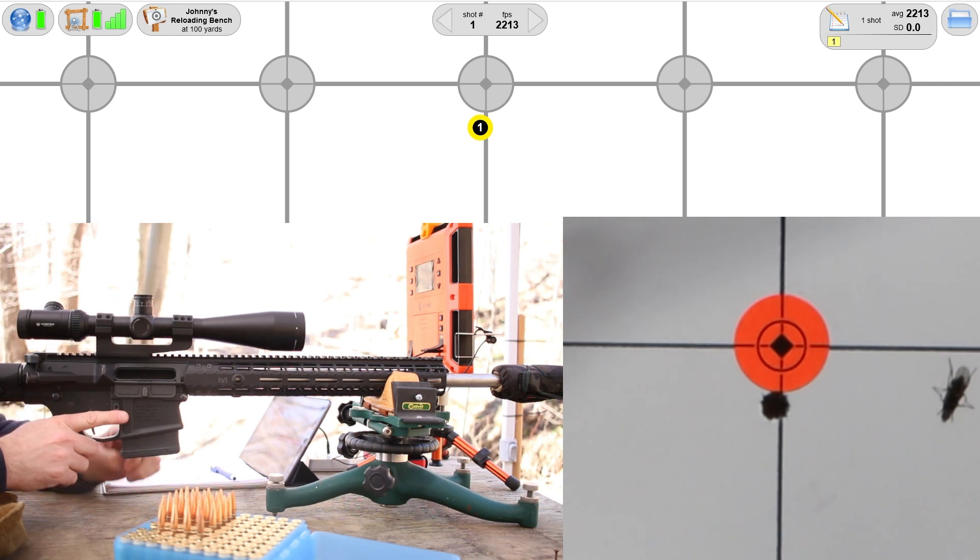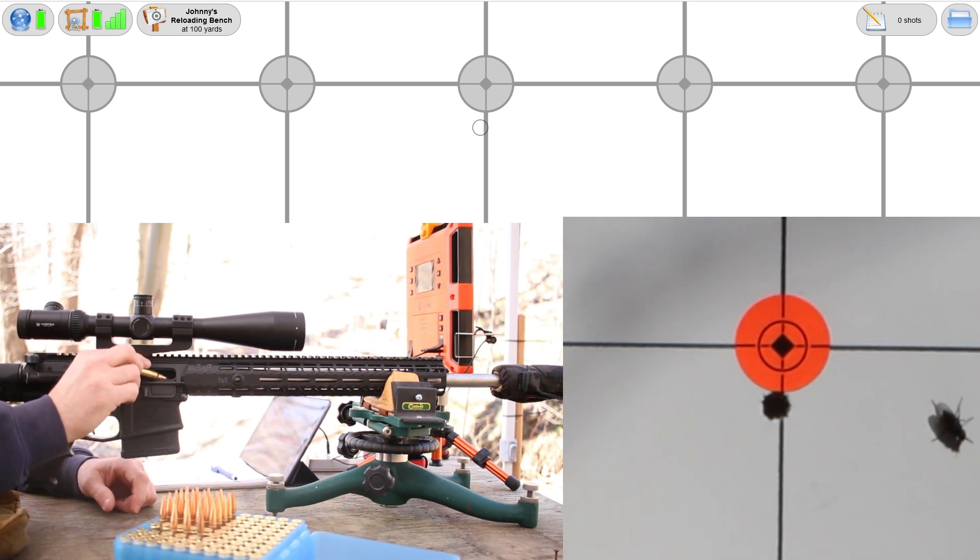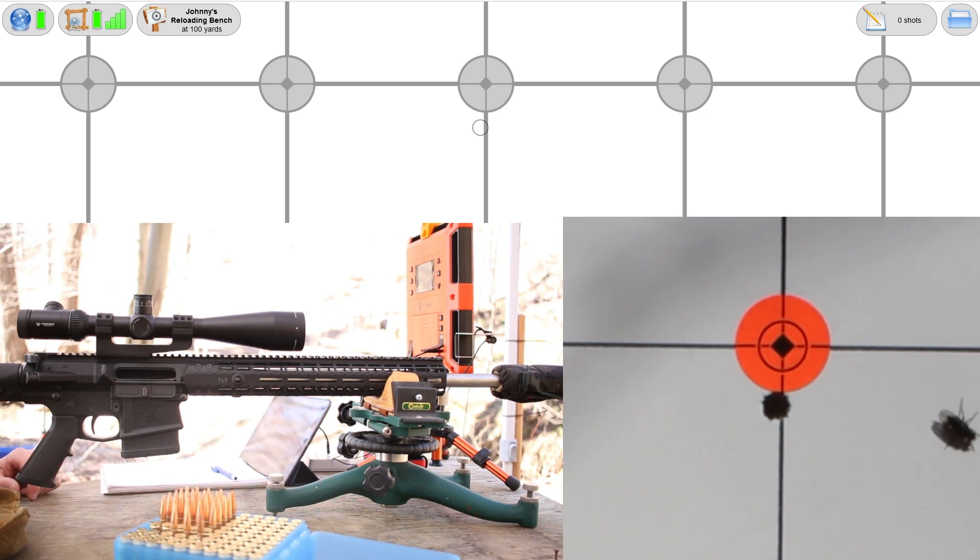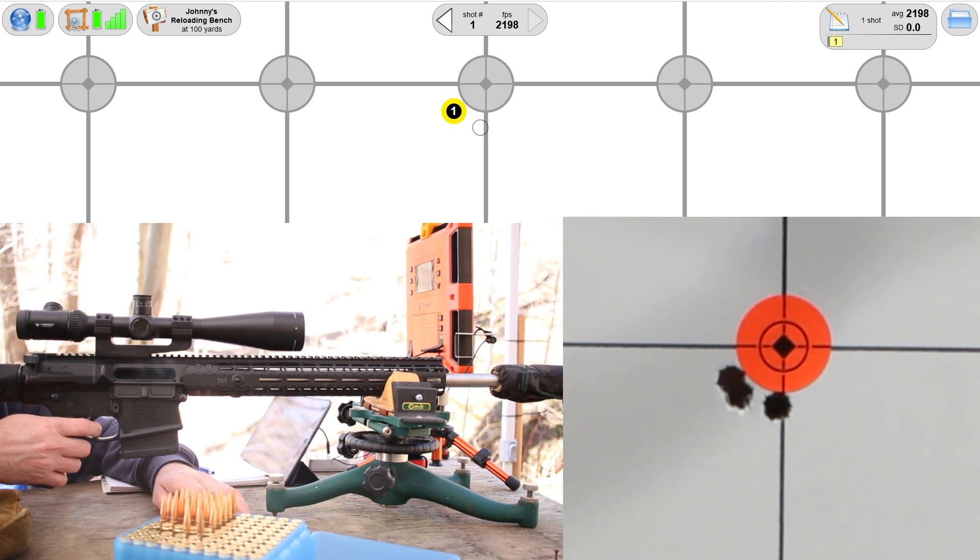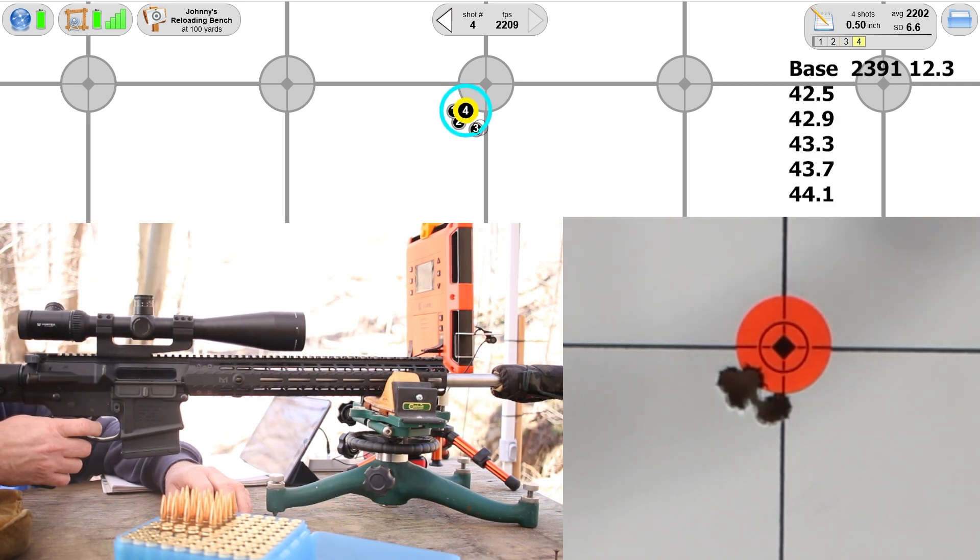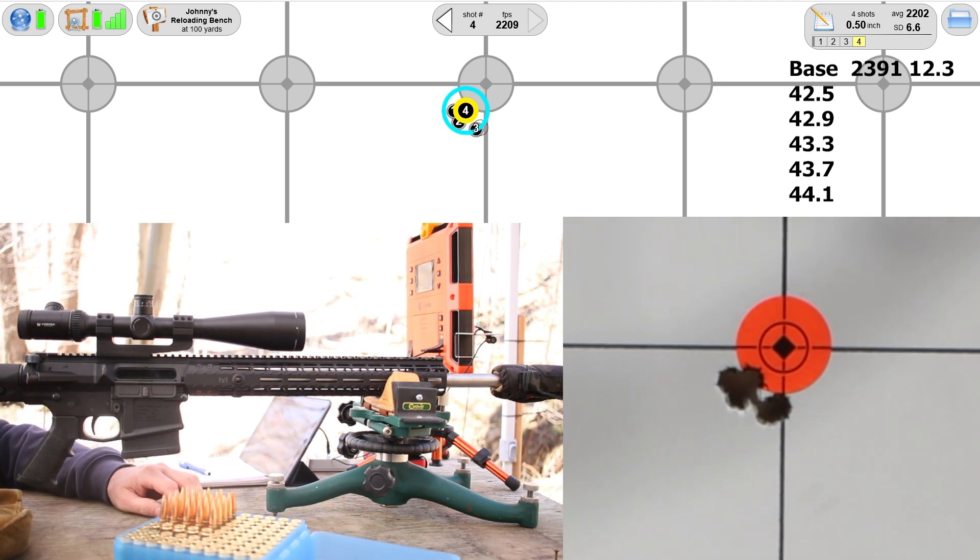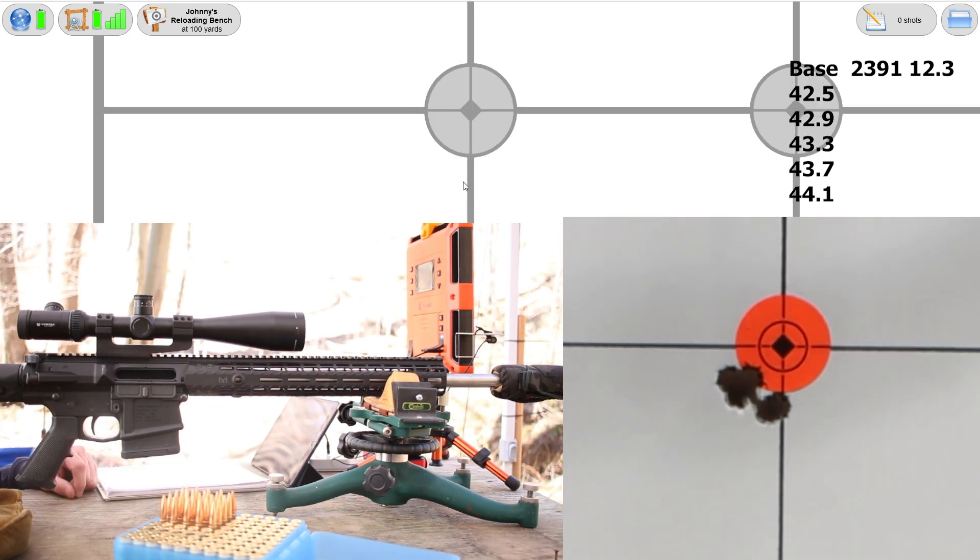That was 2400 feet per second and we hit 4 MOA high. I am going to bring the scope down three and three quarters MOA. I want to continue to shoot at the same dot, so this shot really won't matter. Now I'm going to shoot at that dot above so that we don't mess up two dots. I should look at that piece of brass - that looks pretty good. That first velocity was only 2400 feet per second.